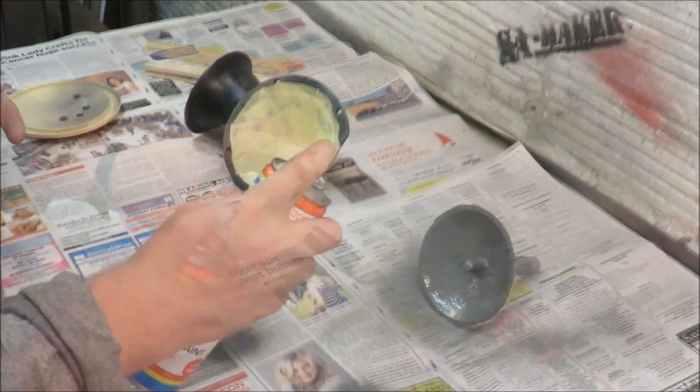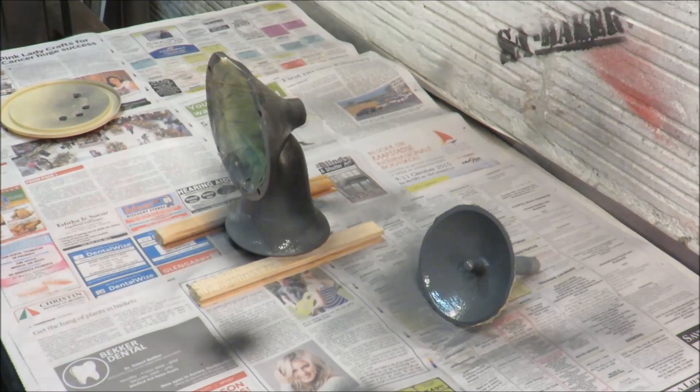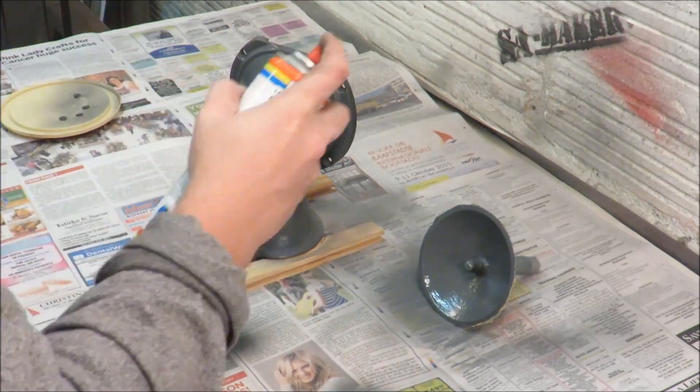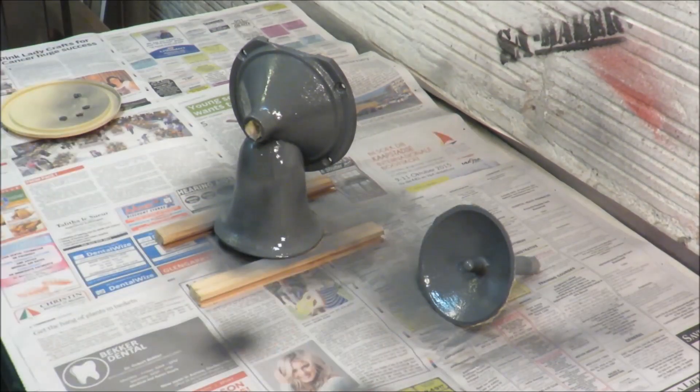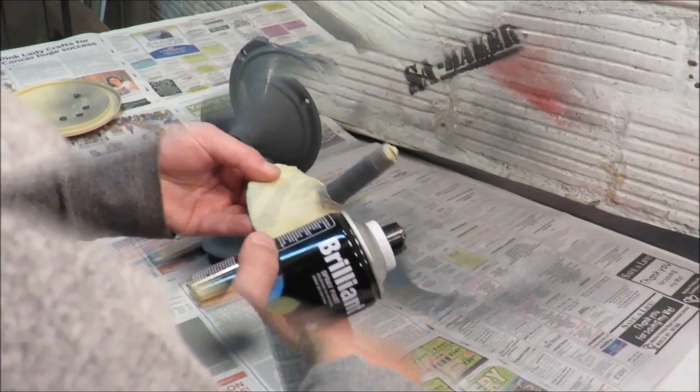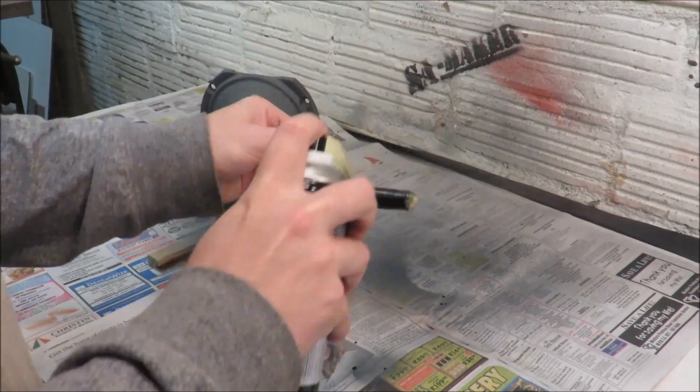I primed the spray areas with grey primer, followed by a gloss black and a brilliant white for the inside of the funnel. The rest of the grinder got a clear coat to protect it from rusting again.